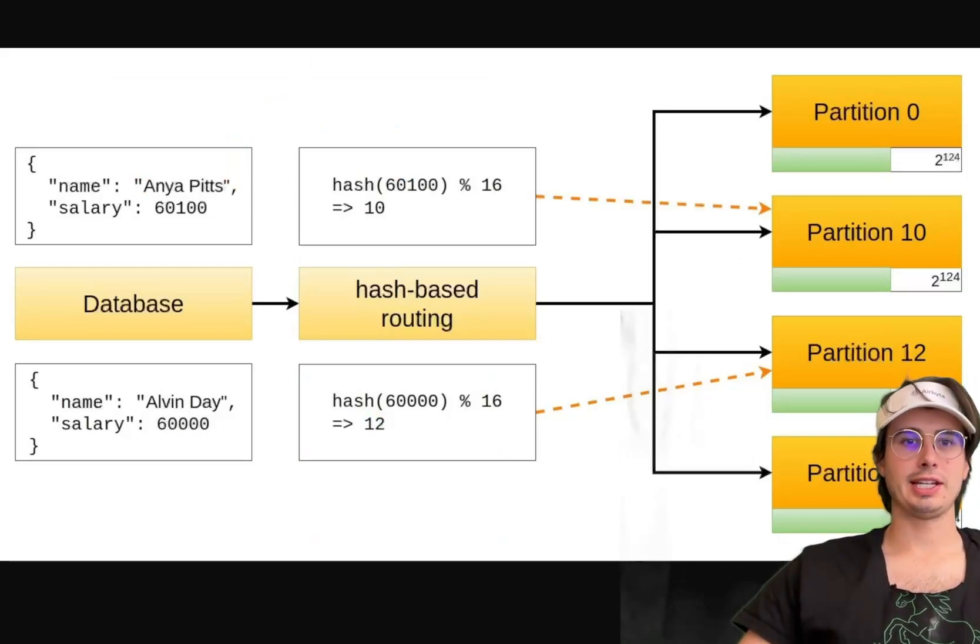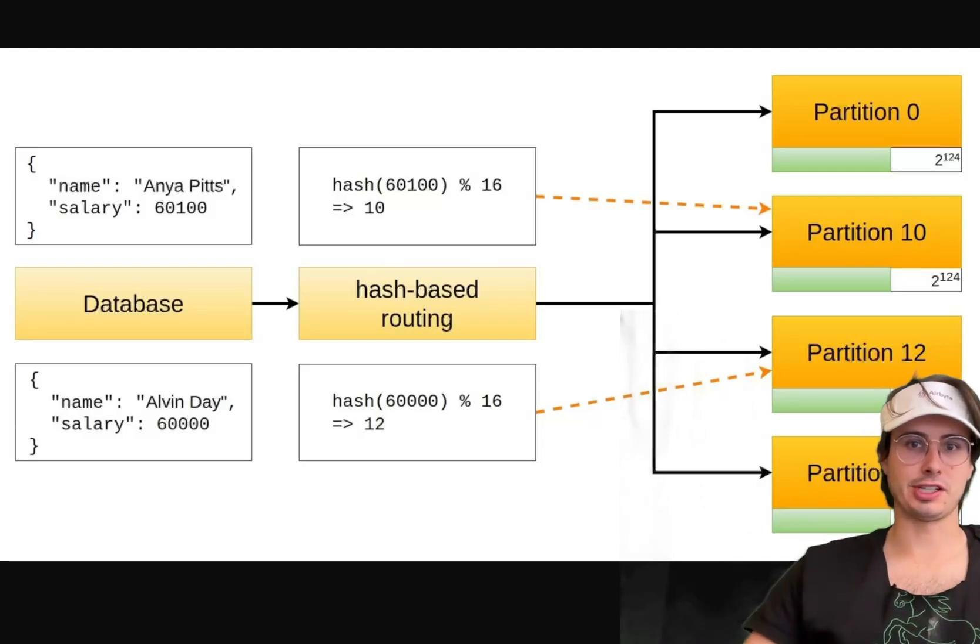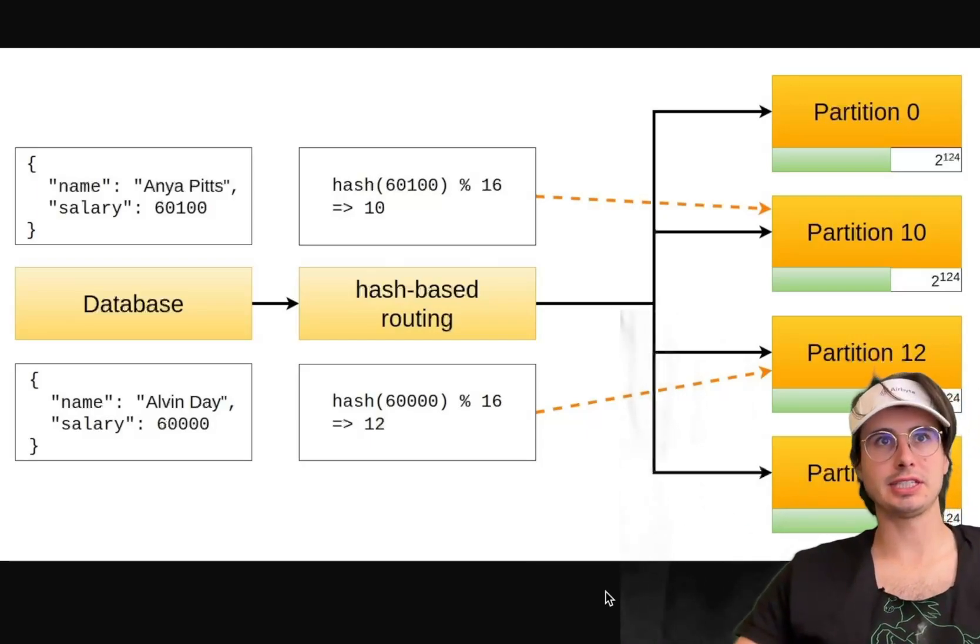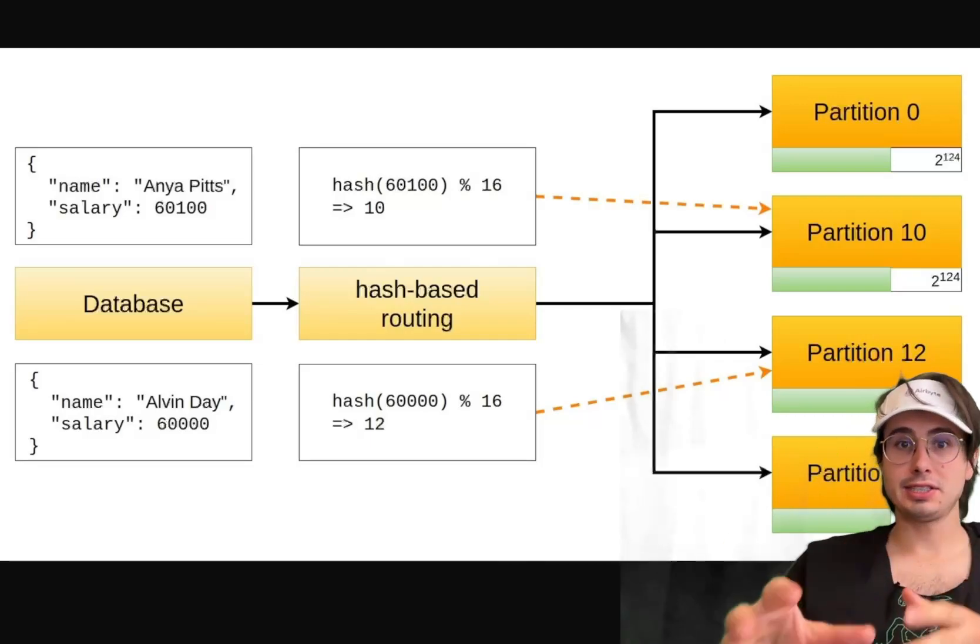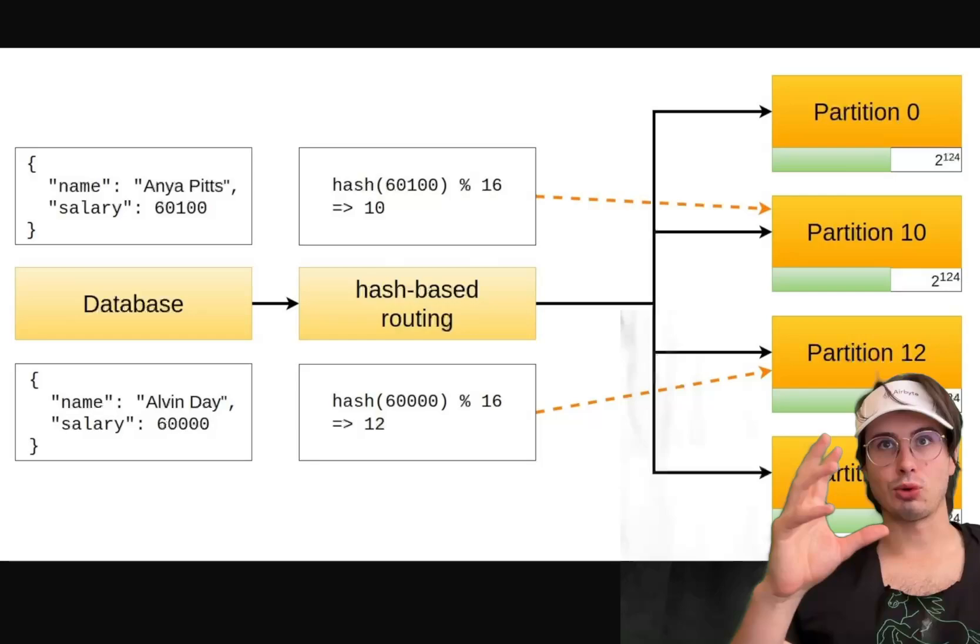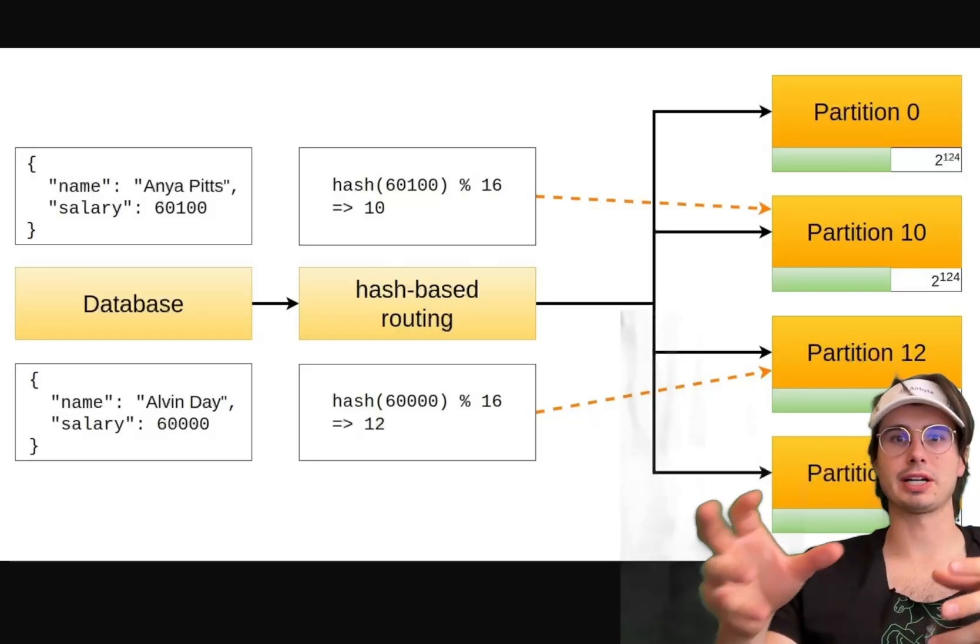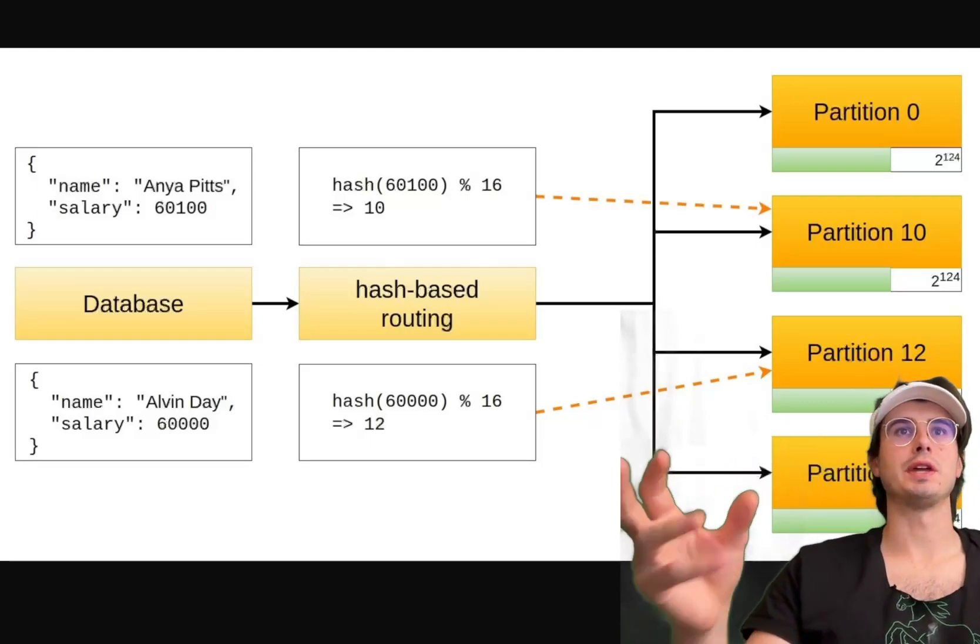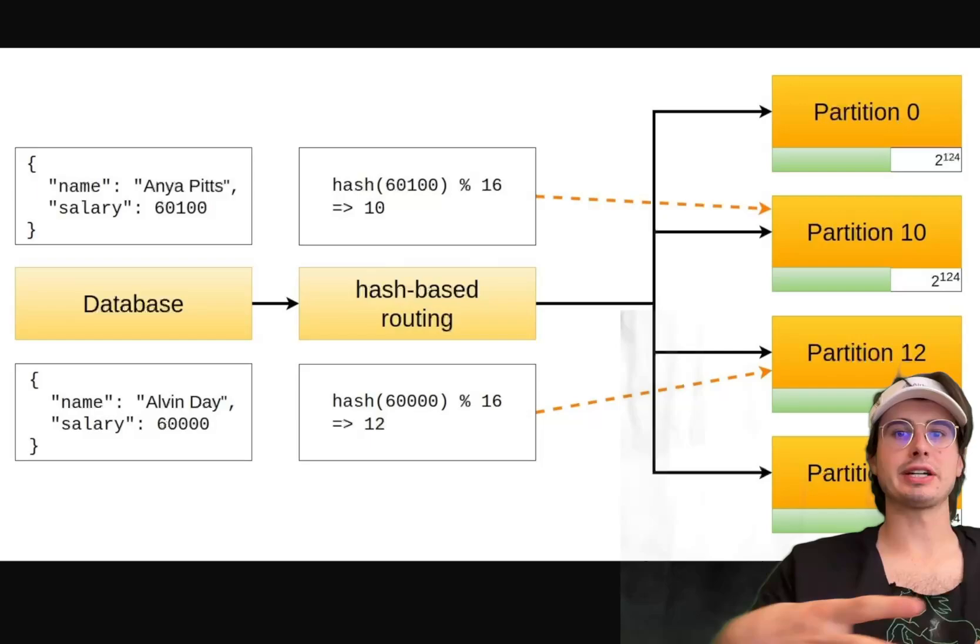A slightly more complicated way to partition is using a hash function. In this example, you take your raw value and use a function to distribute it into one of these buckets based on their salary or age. This is a way to get around unevenly distributed data.